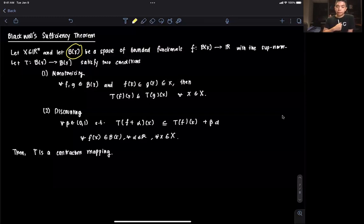If it happens that f(x) is less than or equal to g(x), then we can conclude that the operator evaluated at f and x is less than or equal to the operator evaluated at g(x). And that's monotonicity.